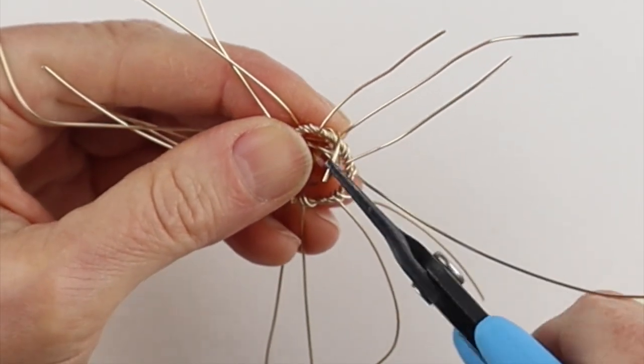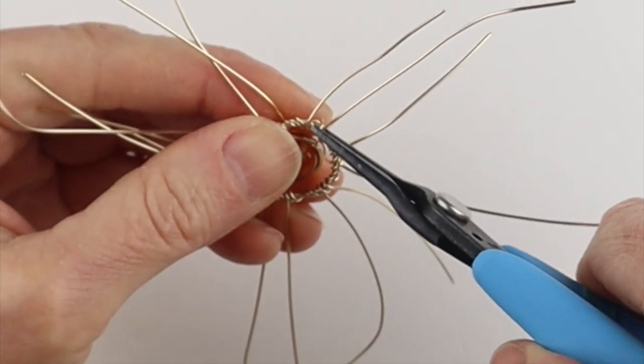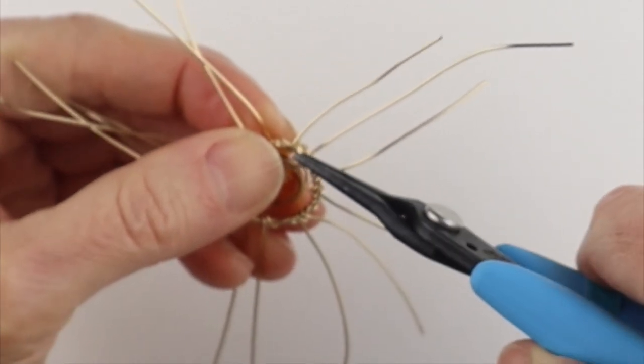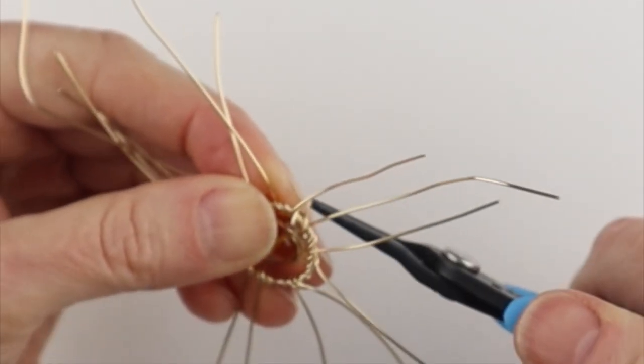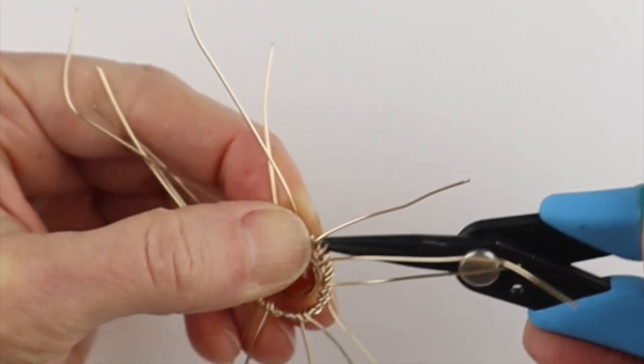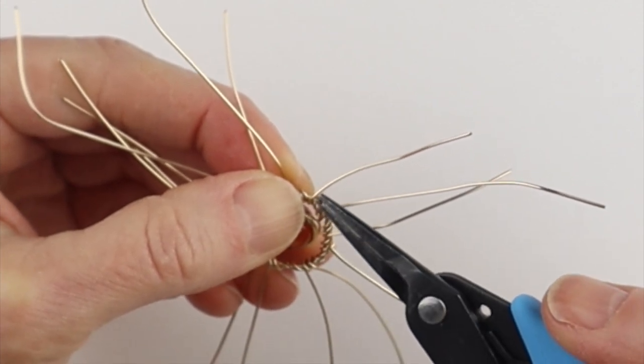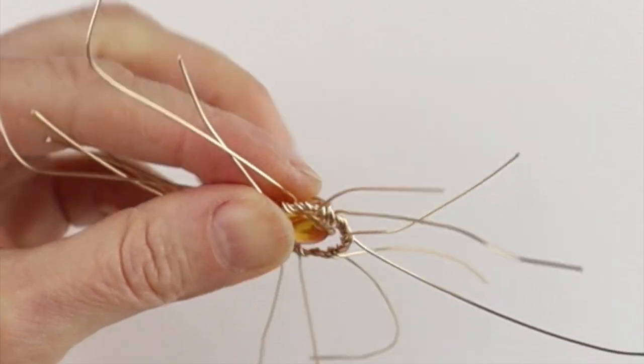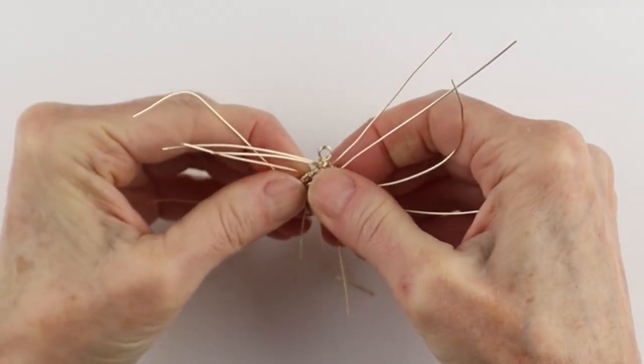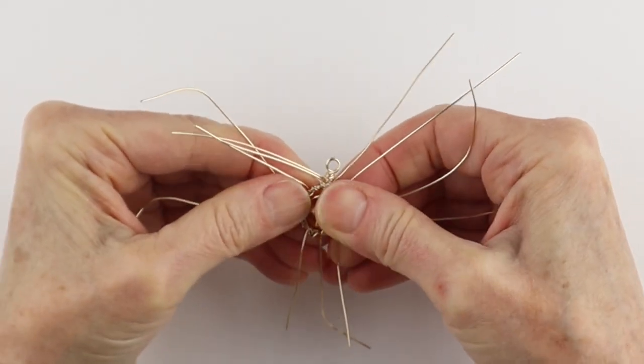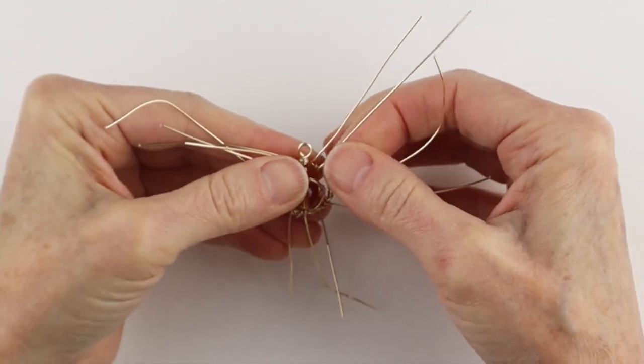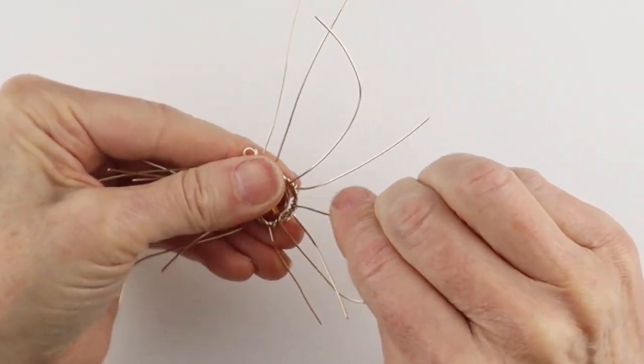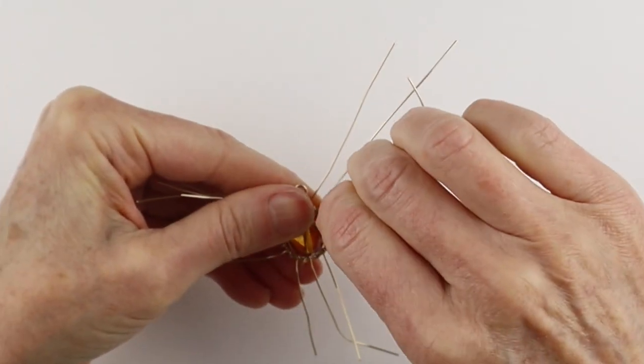Take your tweezer nose pliers. And then just gently bend this around so it doesn't get too distorted. So just bring it all the way around. This is 22 gauge wire. So it is a little bit fragile. So now you've got your bead suspended in the middle.